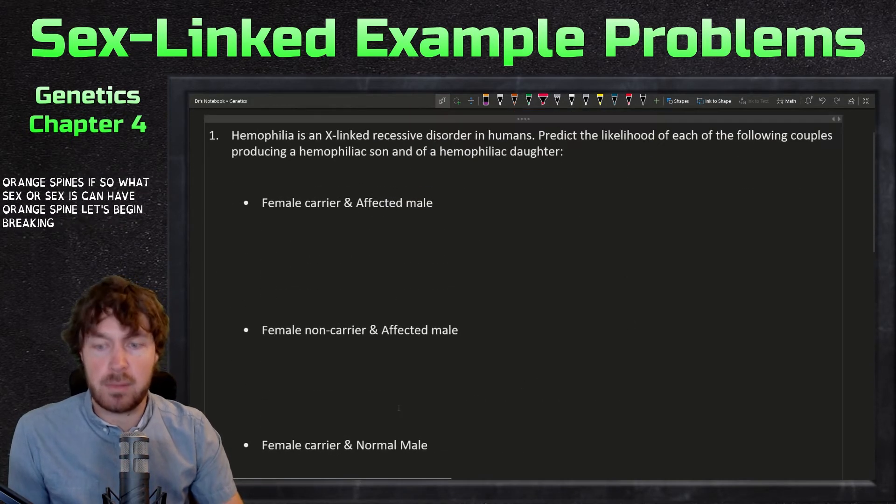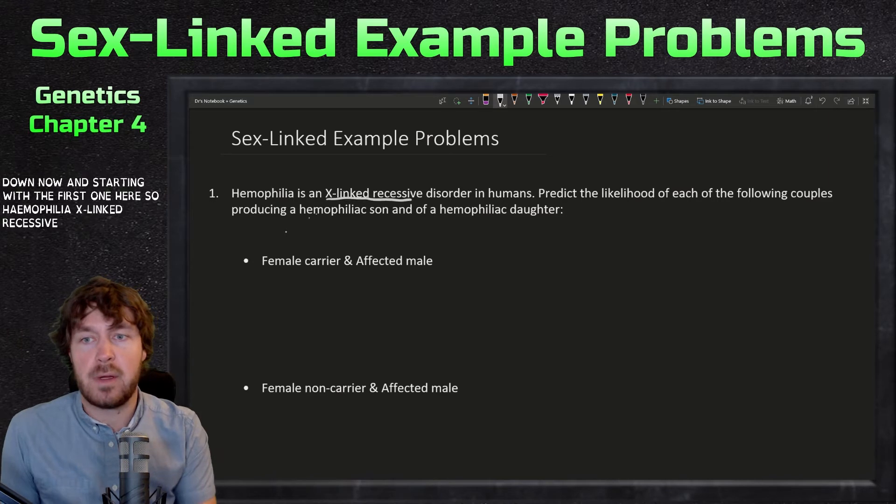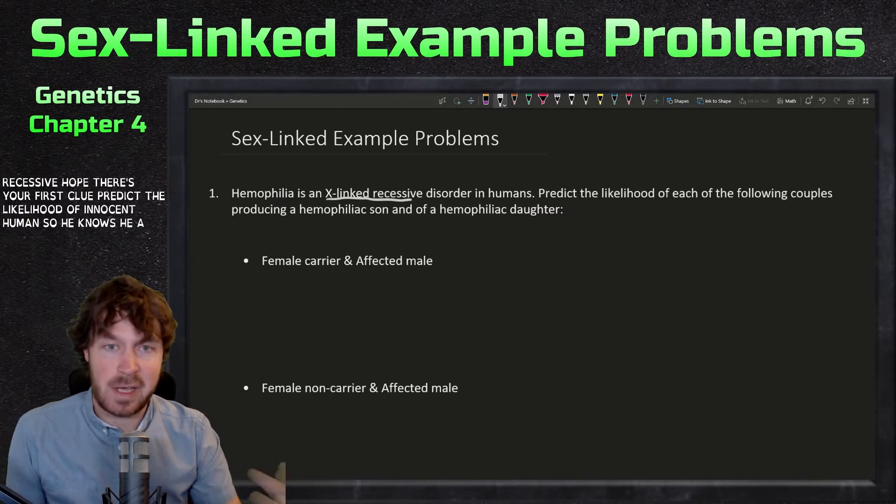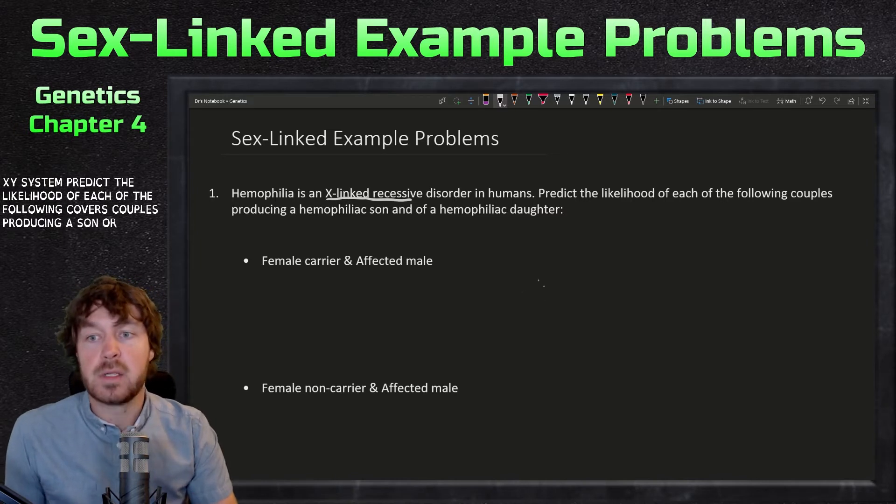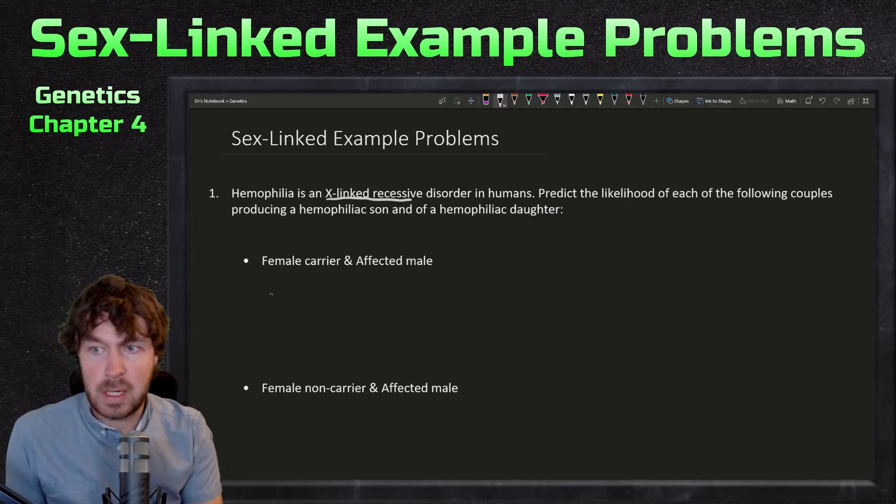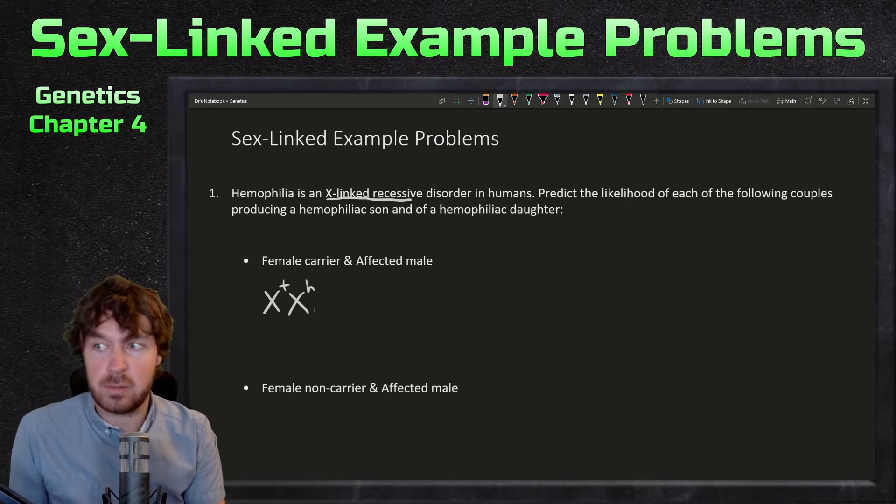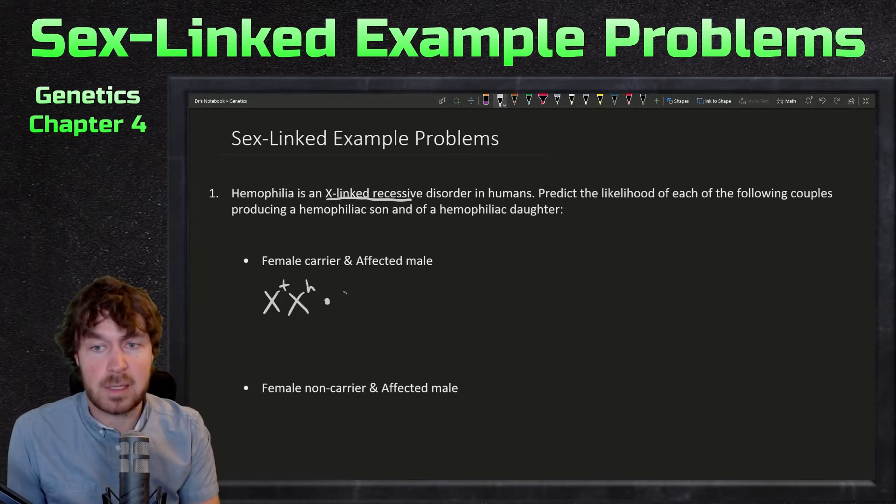Let's begin breaking these problems down. Starting with the first one: hemophilia, X-linked recessive, there's your first clue. Predict the likelihood in humans, so we know it's the XX XY system. A female carrier has to be, remember how we write females XX. Female carrier, let's just do plus is wild type, so that's normal, and h let's make hemophilia. I don't like to write the cross sign here when doing these because it gets confusing, so I just put a dot to represent cross. An affected male, if a male has it, the male carries the one X chromosome and the Y.